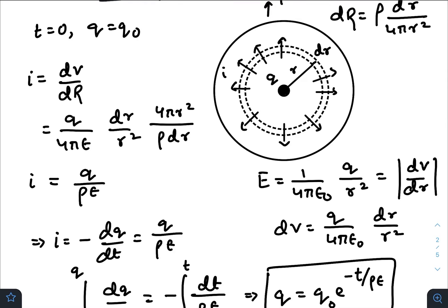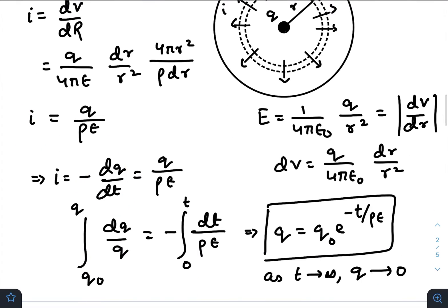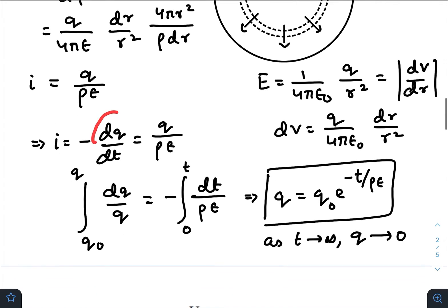Now, the current is flowing at the cost of the decay of this charge, so i must be written as the negative rate of change of q. Solving this differential equation for q, we get the expression of q like this because at t equals zero, initial charge was q₀.